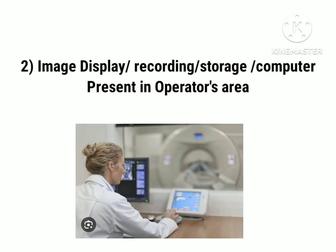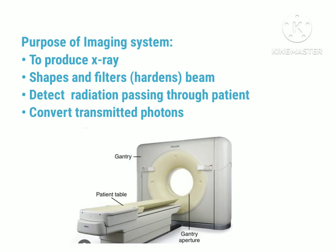The second major component — the image display, recording, storage system — and the computer are all present in the operator's area. This is the area where the occupational radiographer is present and from where he scans the patient's body with the help of the CT scanner. The data obtained is displayed on the computer screen; the computer records, displays, and stores the data obtained by the occupational radiographer. The computer and the CT scanner components work together to obtain the radiographic image.